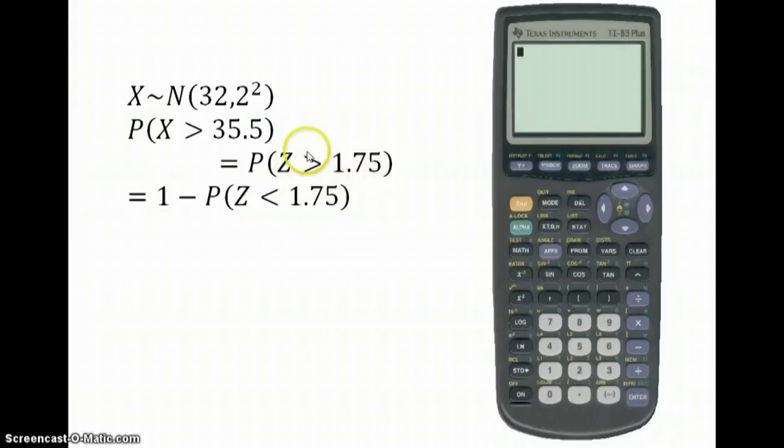Now to do that, we can do one take away the probability of z being less than 1.75, because I'm going to be using the calculator to do less than. So, 1